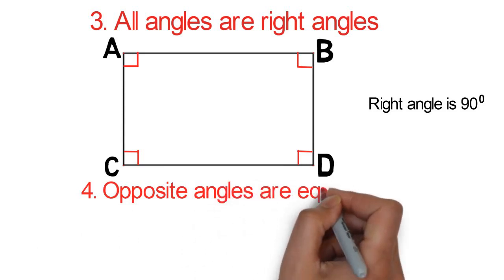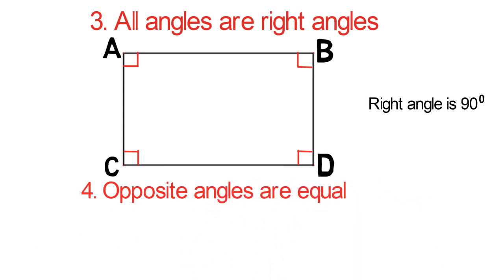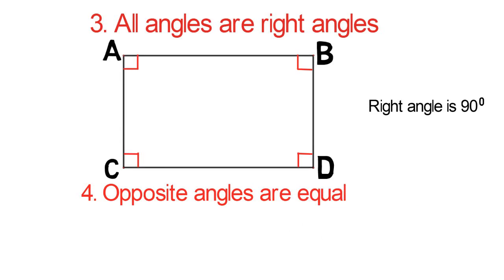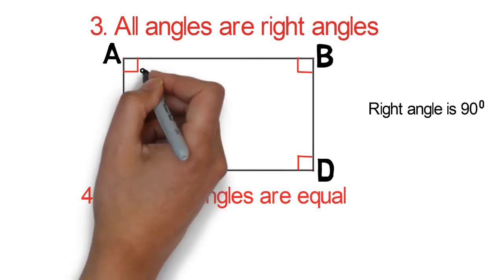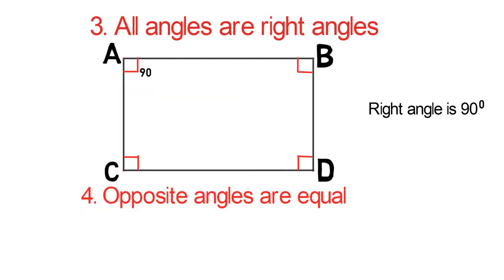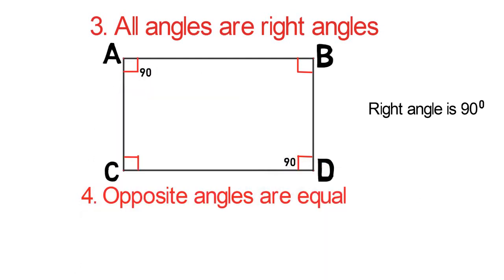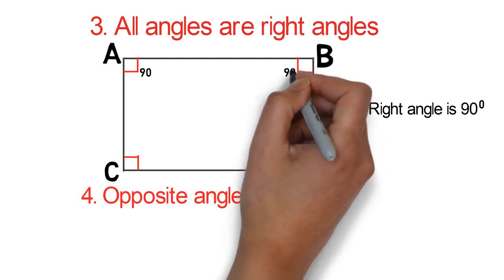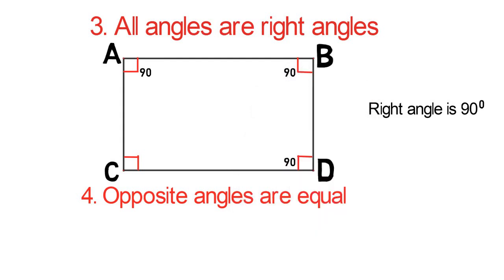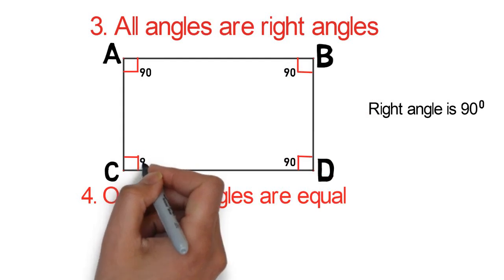Four: opposite angles are equal. So angle A is equal to angle D, and angle B is equal to angle C. If angle A is 90 degrees, angle D is also 90 degrees. And if angle B is 90 degrees, angle C is also 90 degrees.